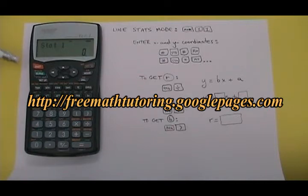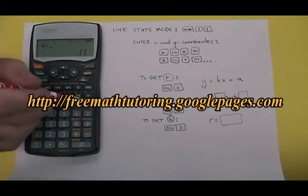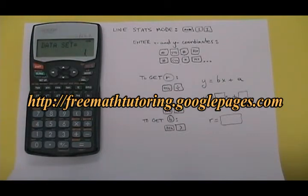The way I do that is I enter the first number, the 4, and then I enter the STO button. Then I enter the 11, and I enter the M plus button. It says data set equals 1, which means that I have entered the first set of x and y coordinates.